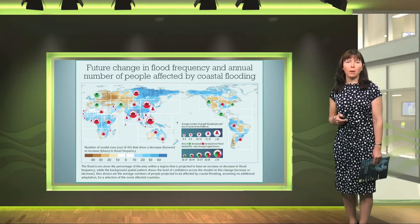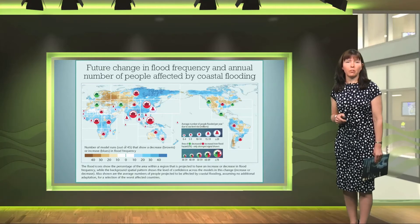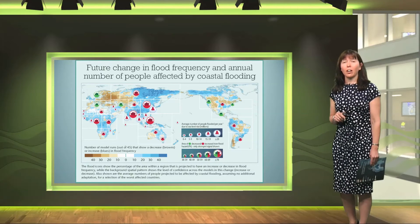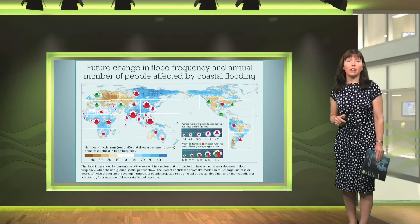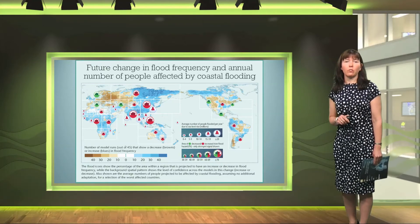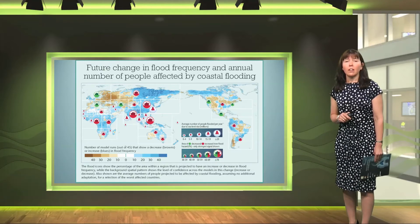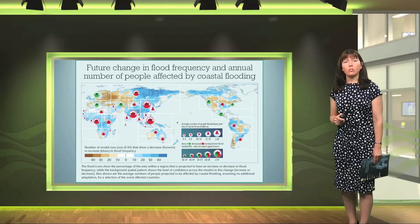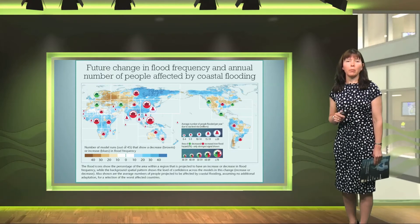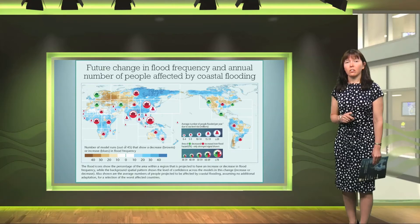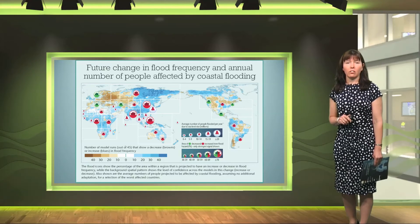Below that map there's a map showing the future change in flood frequency and also the annual numbers of people affected by coastal flooding. The projections for flooding are quite mixed, but large regions of the globe will see increases in frequency of flood while smaller areas see a decrease. On the coast we see tens of millions of people flooded due to a combination of sea level rise and population increase. This assumes that these coastal communities don't adapt to any changes in climate.